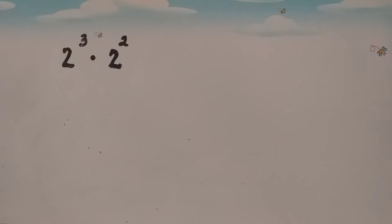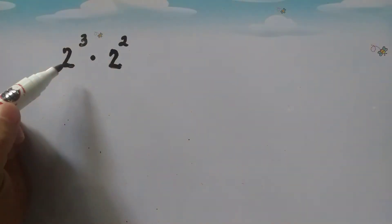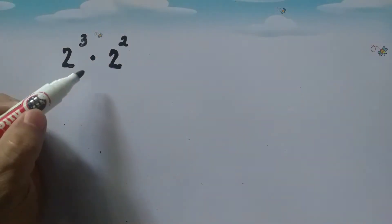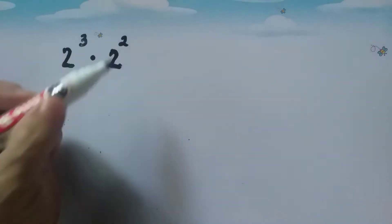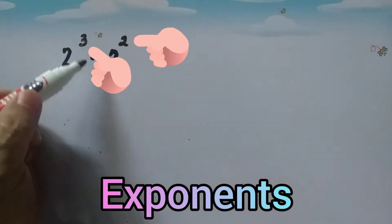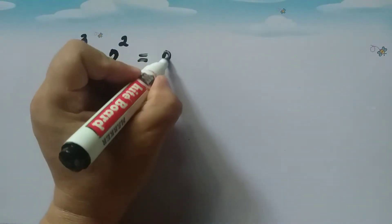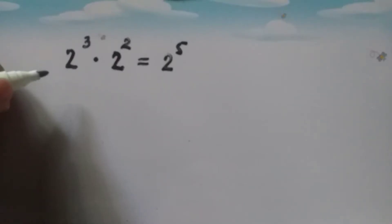We're going to talk about product of powers. Say we have 2 cubed times 2 squared. To simplify product of powers — meaning powers of the same base — we just rewrite the common base then add the exponents. So 2 cubed times 2 squared is equal to 2 to the fifth.